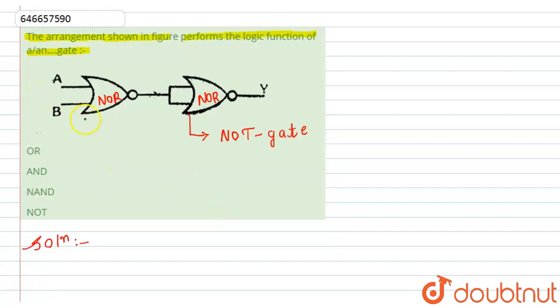If we see the boolean expression for the NOR gate, we know that the boolean expression is given by y = a + b bar. Now let's suppose the output of the first gate is y1. So here y1 will become = a + b bar.